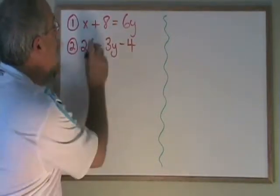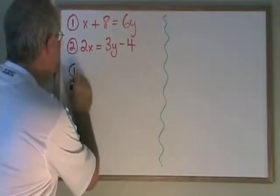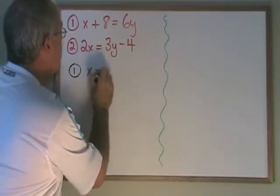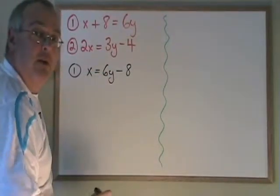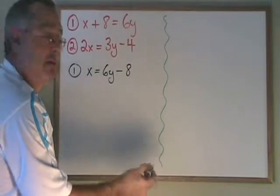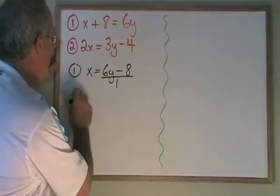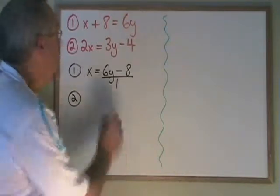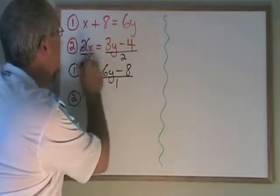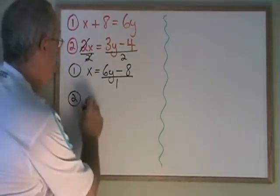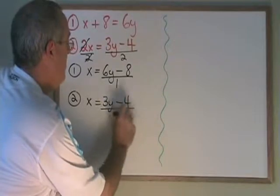Isolating the x in equation 1 is as simple as moving this 8 to the other side. We get x equals 6y minus 8. And if I want to express this in the form of a fraction for cross multiplication, I put it over 1. In equation 2, if I divide both sides by 2, these 2's cancel and I have x equals 3y minus 4 over 2.